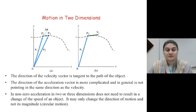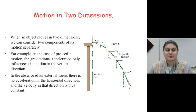For motion in two dimensions, these are the two pictures that correspond to the displacement as well as the velocity vectors. The direction of the velocity vector is tangent to the path of the object. The direction of the acceleration vector is more complicated and generally not pointing in the same direction as the velocity. A non-zero acceleration in two or three dimensions does not need to result in a change of speed in an object. It may only change the direction of motion and not its magnitude, for example, for a circular motion.